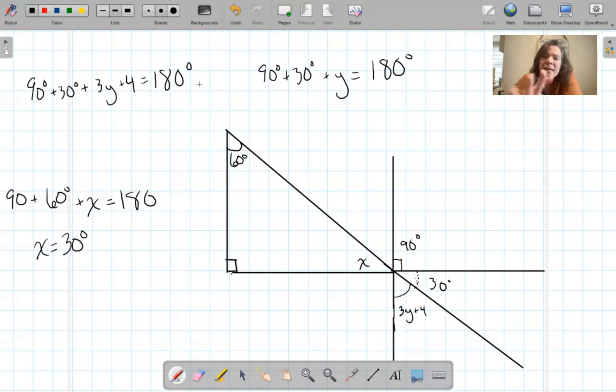So it would be 90 plus 30 plus 3Y plus 4 equals 180. And you'd have to solve that math out. Now, don't actually solve that math right now because I made it all up and I don't even know if it'll work. But that's how it works.